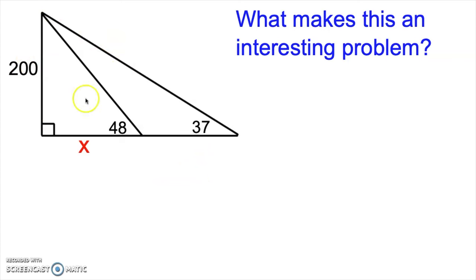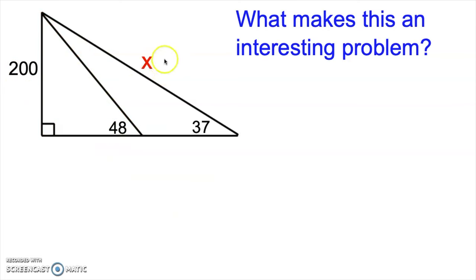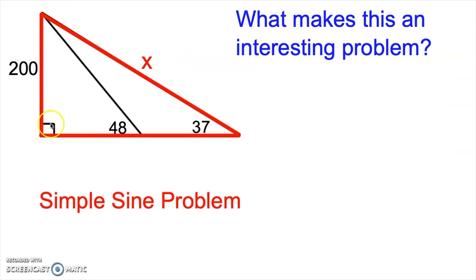What if the x was over here? Well, then the side we're looking for is actually a side of this little red triangle, and we could just use tangent — opposite over adjacent with the angle 48. Simple tangent problem. What if instead the x was over here on the hypotenuse of the large triangle? Well, then it's just a simple sine problem using that large right triangle. 37 would be the angle we'd use, and that's the opposite side and that's the hypotenuse.